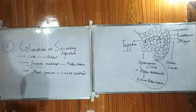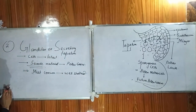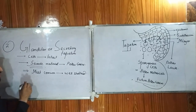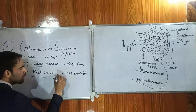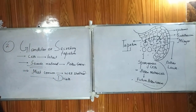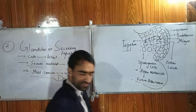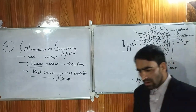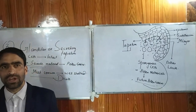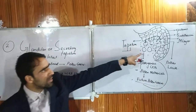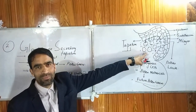The most common type of tapetum found in the endosperms is the glandular type, which we also call the secretory type of tapetum. It has been well studied, and we have particularly observed it in dicots. We will now discuss what biomaterials are secreted from this type of tapetum for the grooming and development of the pollen grains.